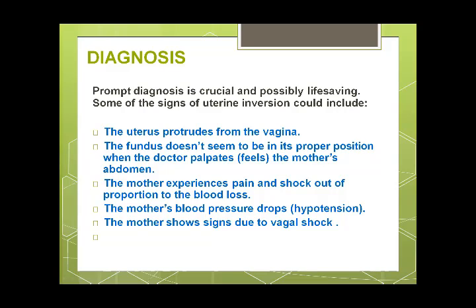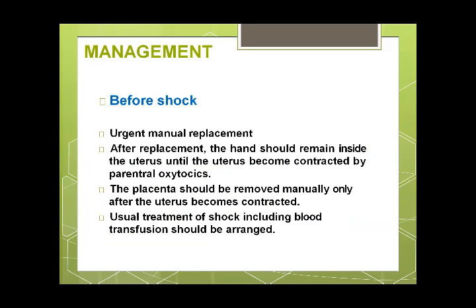Most complications of childbirth relate to postpartum hemorrhage, but this complication shows signs of vasovagal shock instead. The sooner it is recognized, the better, because we can prevent the constriction ring from forming and gently reduce the uterus back into position. As early as it is recognized and reduced, the better, because the constriction ring will not yet have developed.